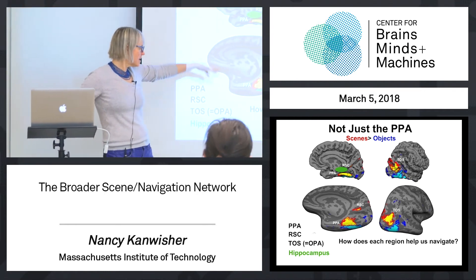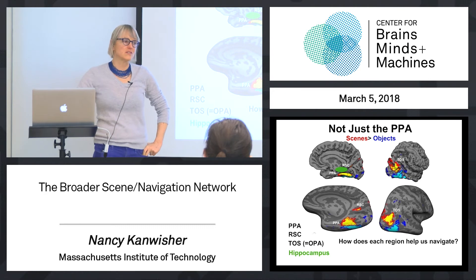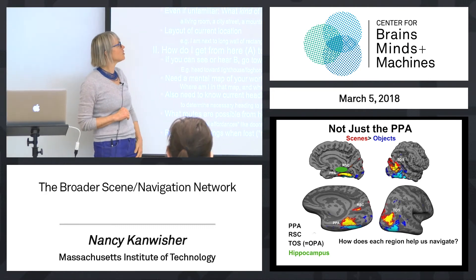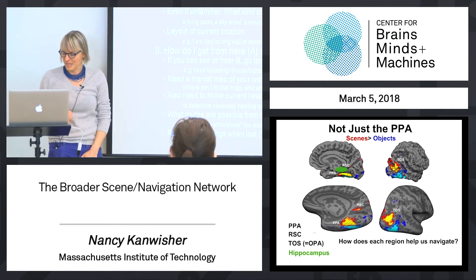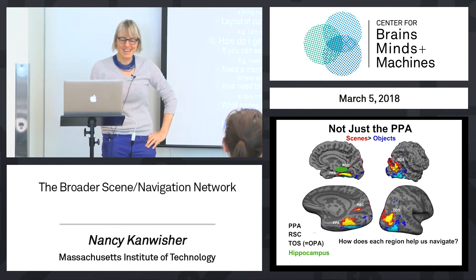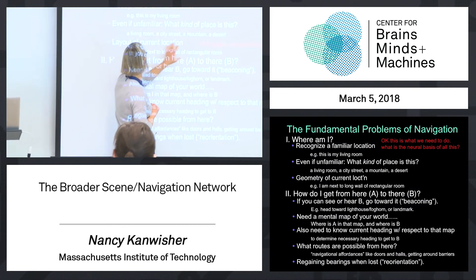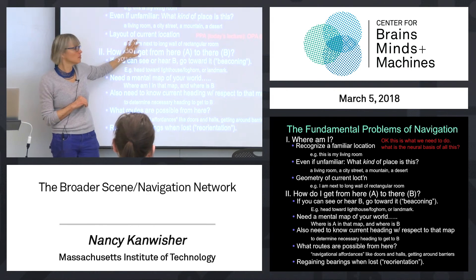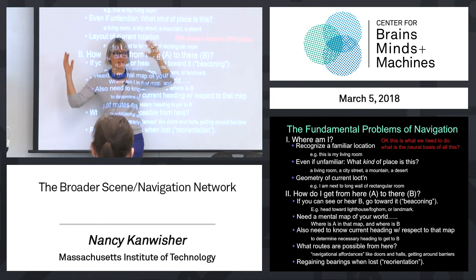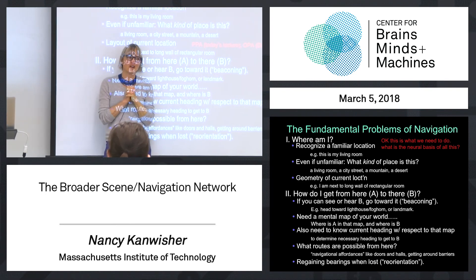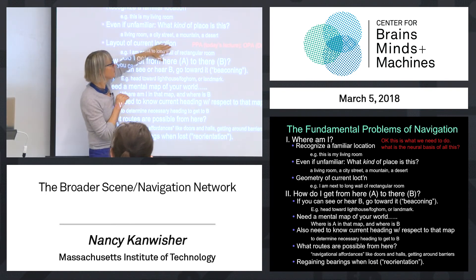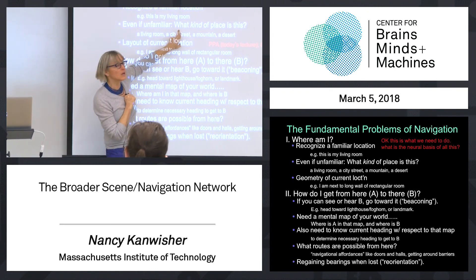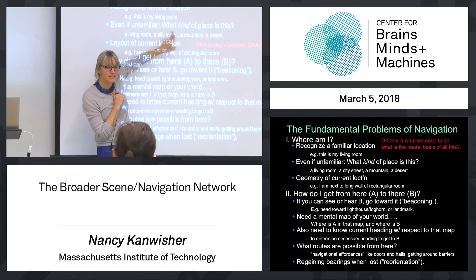What we really want to know is how does each of these regions contribute to our ability to navigate around in the world? Mostly, we talked about the PPA and its role in perceiving the layout of space around you. The Dilks paper looks at that occipital region and makes the argument that it is involved both in perceiving the shape of space around you and also in identifying what kind of scene it is.